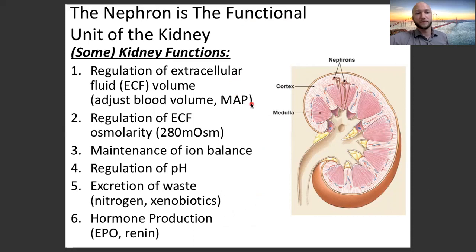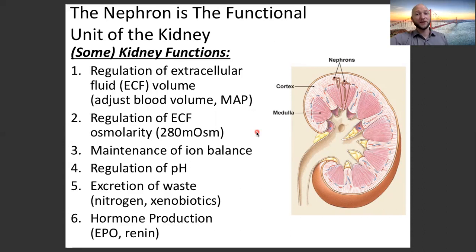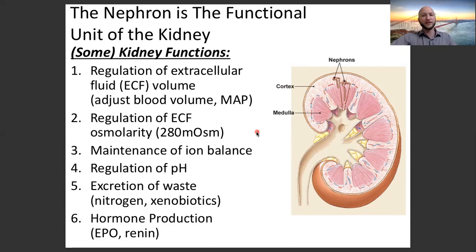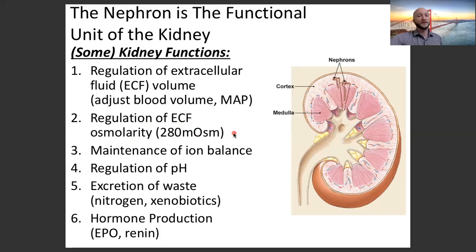What do kidneys do? Know this slide — it's easy to ask which of the following is a function of the kidney. Regulation of extracellular fluid volume is the long-term control of blood pressure. Blood volume is decreased by the kidneys producing urine. Regulation of extracellular fluid osmolarity — we've talked about osmolarity many times in this class, it's very important for normal human functioning, and the kidneys help regulate that osmolarity.